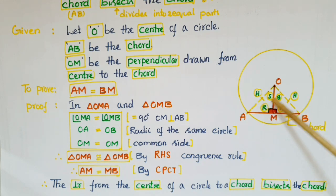This is the common side of these two triangles. So right angle, hypotenuse, and side of one triangle are equal to corresponding right angle, hypotenuse, and side of the other triangle. Therefore, triangle OMA is congruent to triangle OMB by RHS congruence rule.